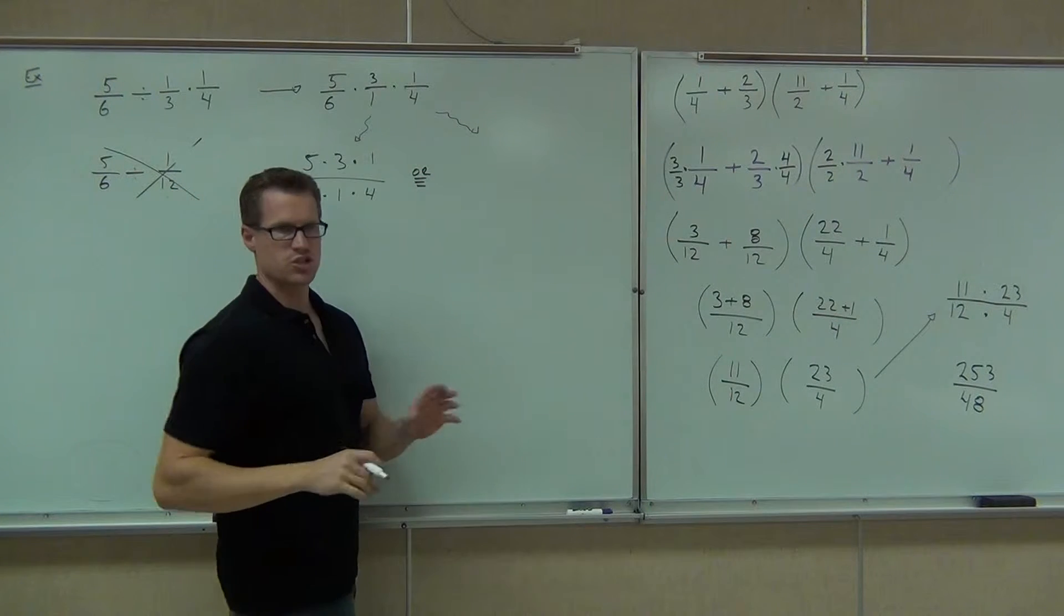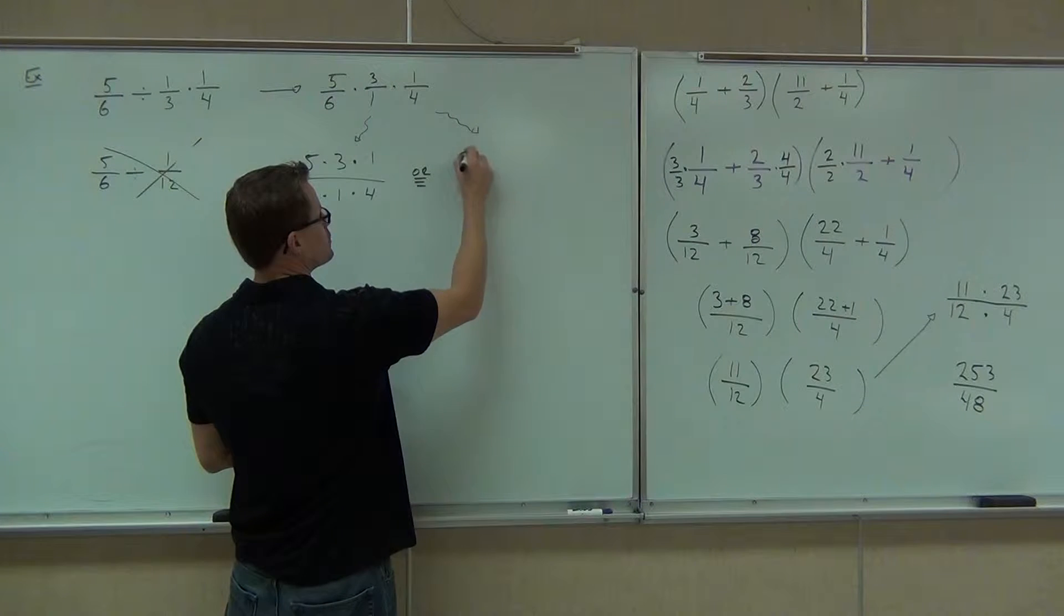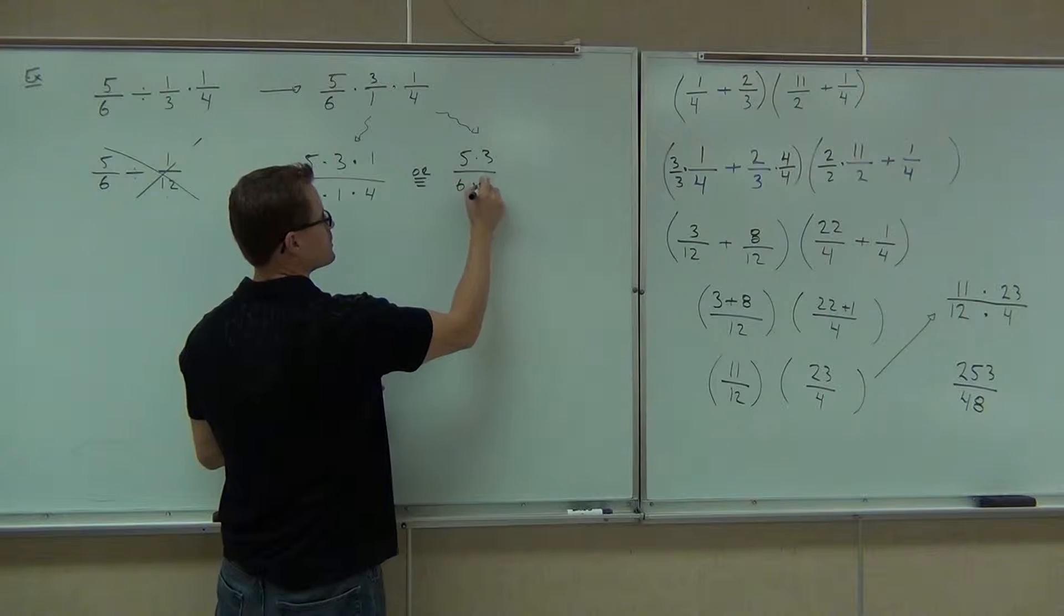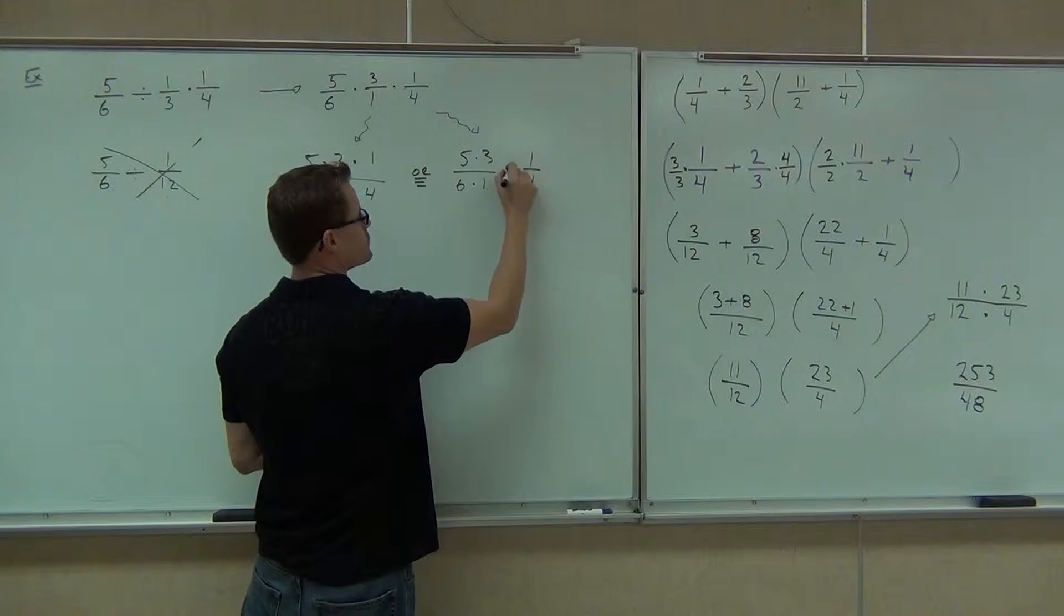Or, you don't have to do both, just choose one. You're going to do 5 times 3 over 6 times 1, and hold off on that 1 fourth for just a moment.